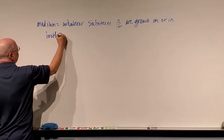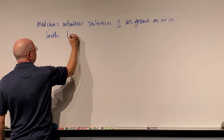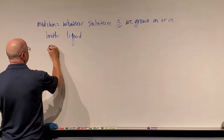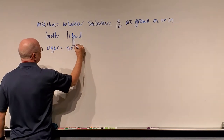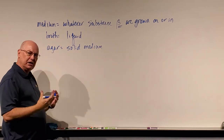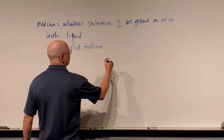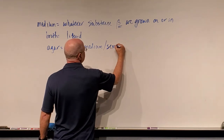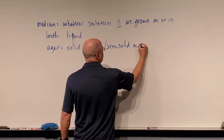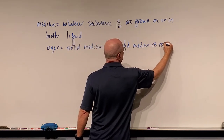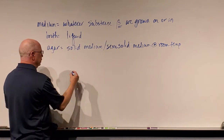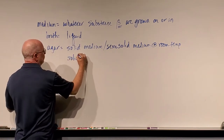There are different nutrient broths. When we talk about agar, we're talking about a solid medium — though it's really a semi-solid, like gelatin, like Jell-O. It is a solid or semi-solid medium at room temperature. It actually gels or solidifies at about 40 degrees Celsius or lower — so body temperature, room temperature, and lower.